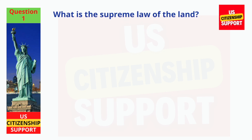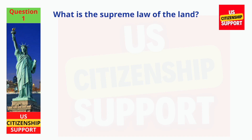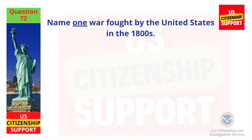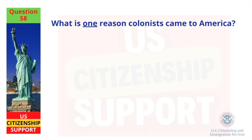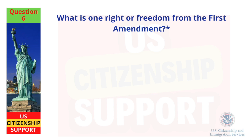What is the Supreme Law of the Land? The Constitution. Name one war fought by the United States in the 1800s. Civil War. What is one reason colonists came to America? Freedom. What is one right or freedom from the First Amendment? Speech.